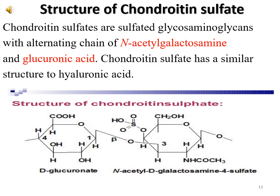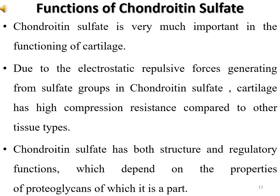Chondroitin sulfates are sulfated glycosaminoglycans with alternating chains of N-acetylgalactosamine and glucuronic acid. Chondroitin sulfate has a similar structure to hyaluronic acid. It is very important in the functions of cartilage; due to electrostatic repulsive forces generated from sulfate groups, cartilage has high compression resistance. Chondroitin sulfate has both structural and regulatory functions which depend on the properties of proteoglycans of which it is a part.